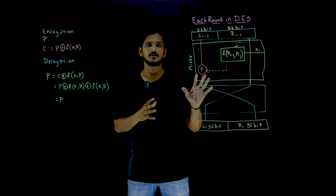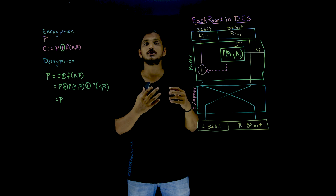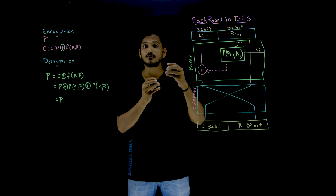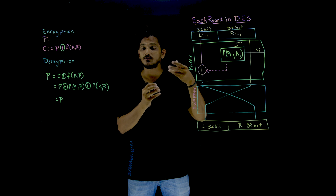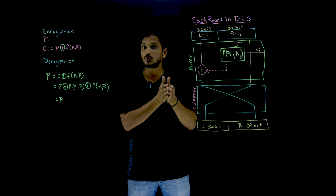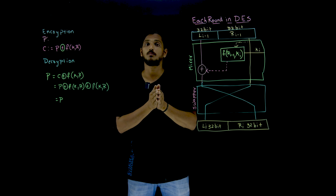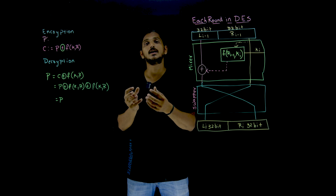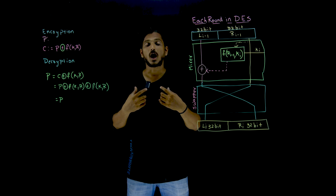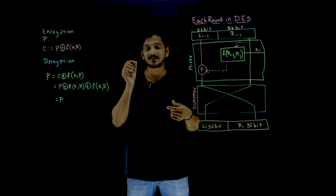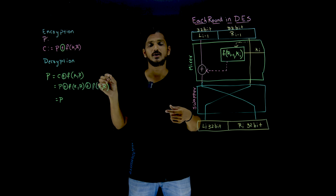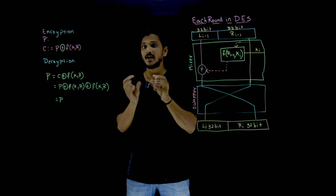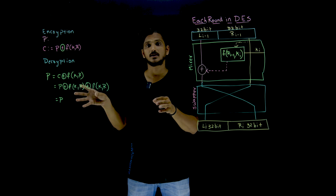Coming to today's class, our DES is using Feistel Cipher technique. Non-invertible elements are used in Feistel Cipher. Even though we are using non-invertible components, still during the decryption we can decrypt it. That discussion was made in our previous classes when we discussed the Feistel Cipher. There we provided an idea — please watch that class and come back here.